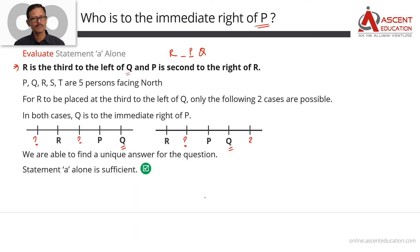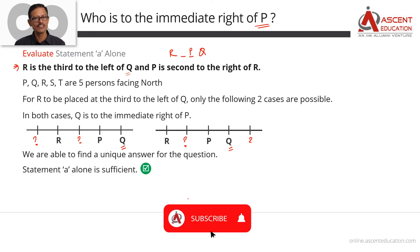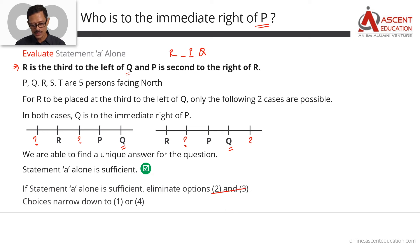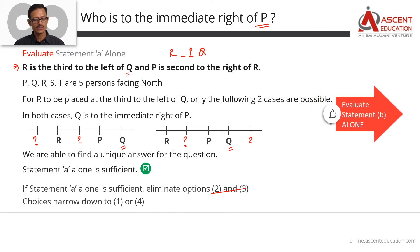Therefore, Statement A alone is sufficient. This means we can eliminate answer options 2 and 3. The answer is either option 1 (A sufficient, B not) or option 4 (each independently sufficient). Now let's evaluate Statement B alone to decide between options 1 and 4.